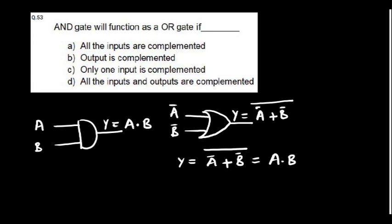An AND gate will function as an OR gate if both inputs and outputs are complemented. As per De Morgan's theorem, complementing all inputs and outputs converts an OR gate to an AND gate.